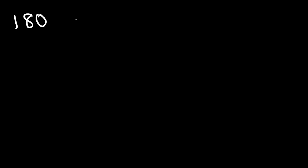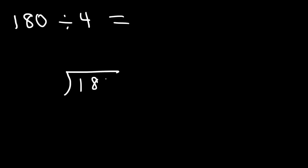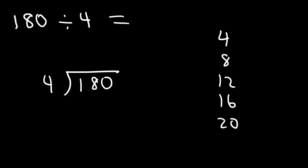Let's try this problem: what is 180 divided by 4? Go ahead and work on this problem. So 180 is the dividend and 4 is the divisor. Now 4 doesn't go into 1, but how many times does 4 go into 18? If we make a list by adding 4s: 4, 8, 12, 16, 20.